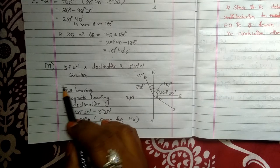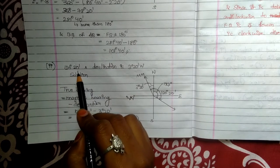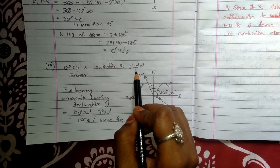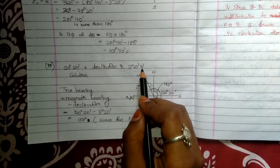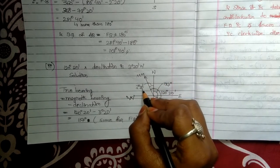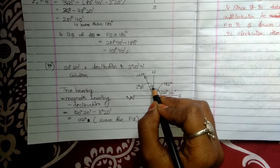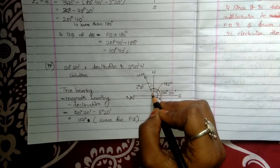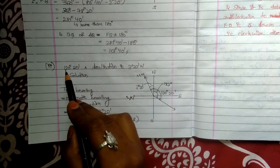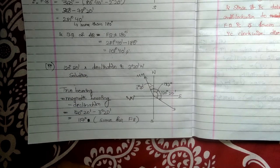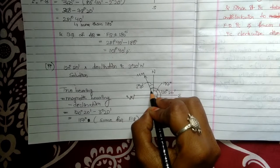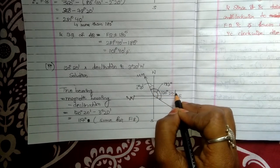For the second question, the magnetic bearing is 120 degrees 20 minutes and the declination is 3 degrees 20 minutes west. So from north to west, 3 degrees 20 minutes. When we draw this angle line to the last, it becomes our magnetic meridian. The magnetic bearing of 120 degrees 20 minutes is always taken from the magnetic meridian, and since no direction is stated, we assume clockwise.